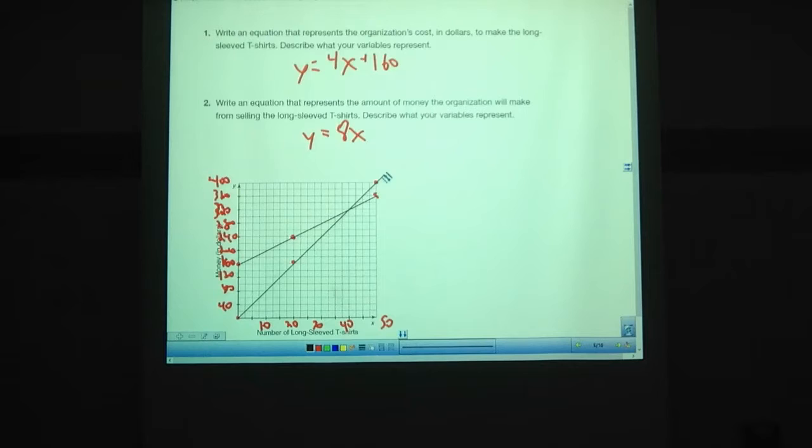So, there's that line of how much it's costing us. How much money we made. So, we made $160 selling those 20 shirts. We made $400 selling 50 shirts. The y-intercept here would be zero. And now we can see that they cross right here at 40, $320.